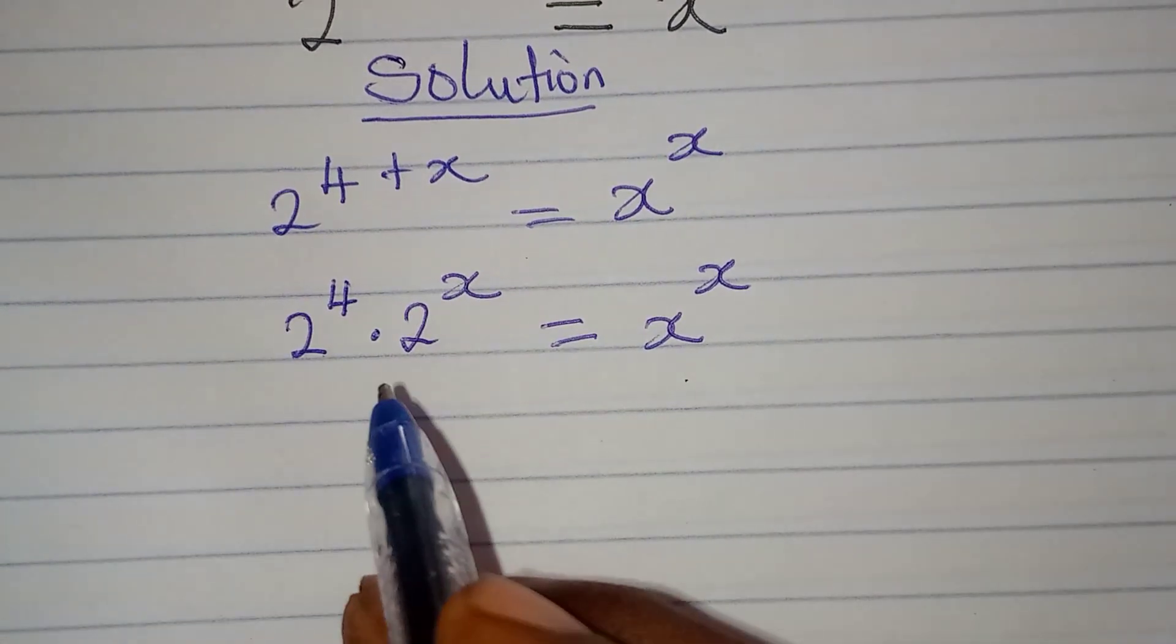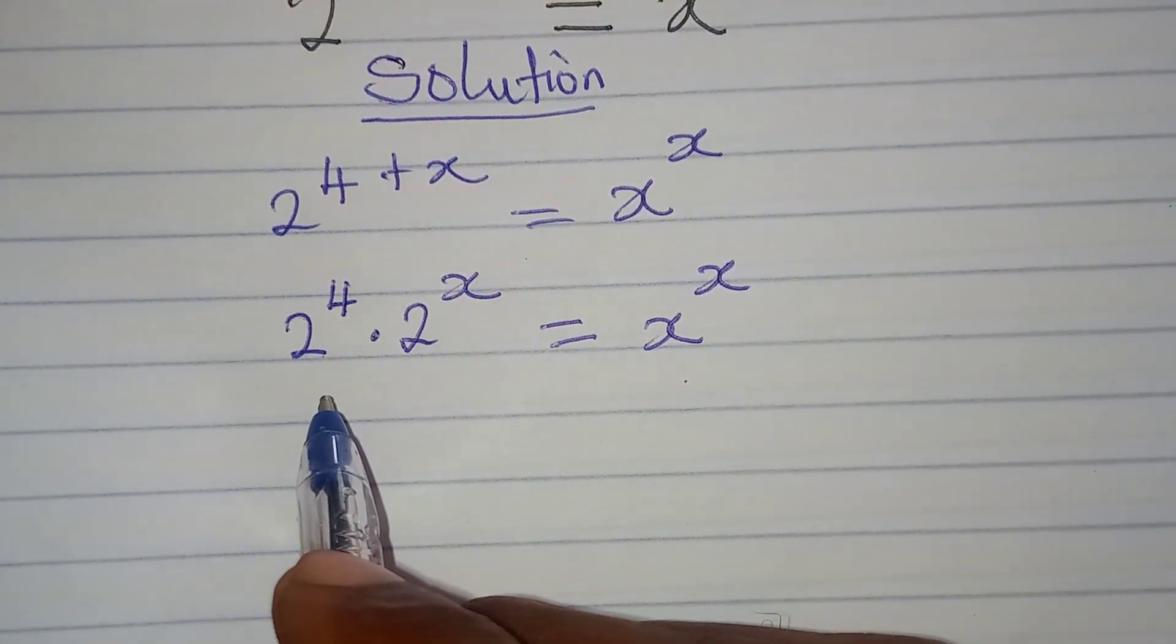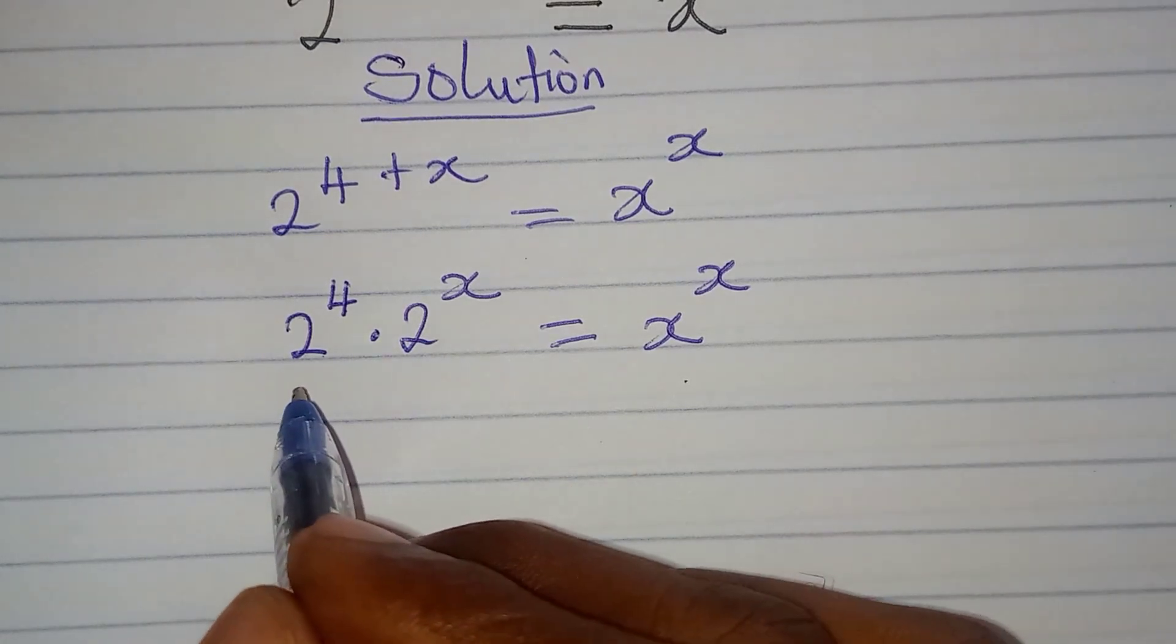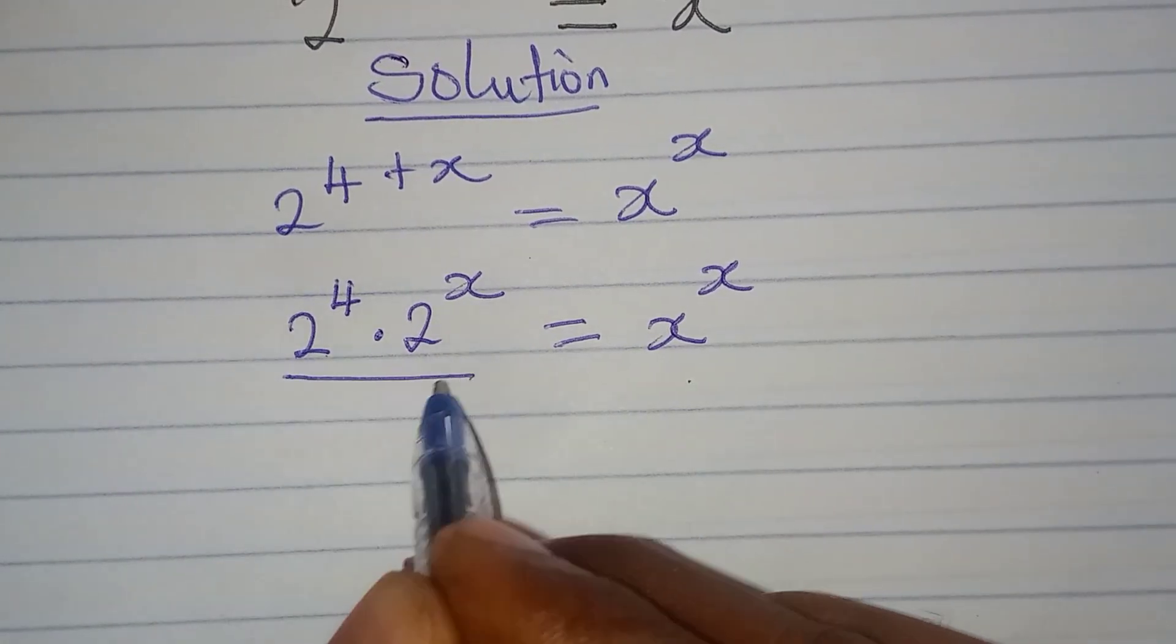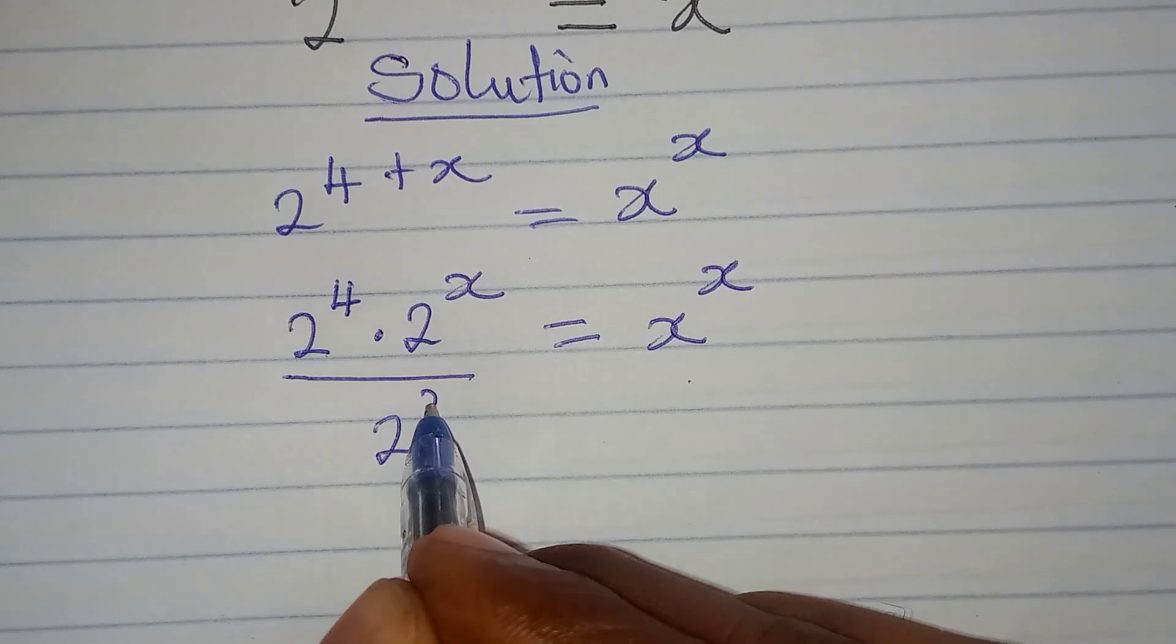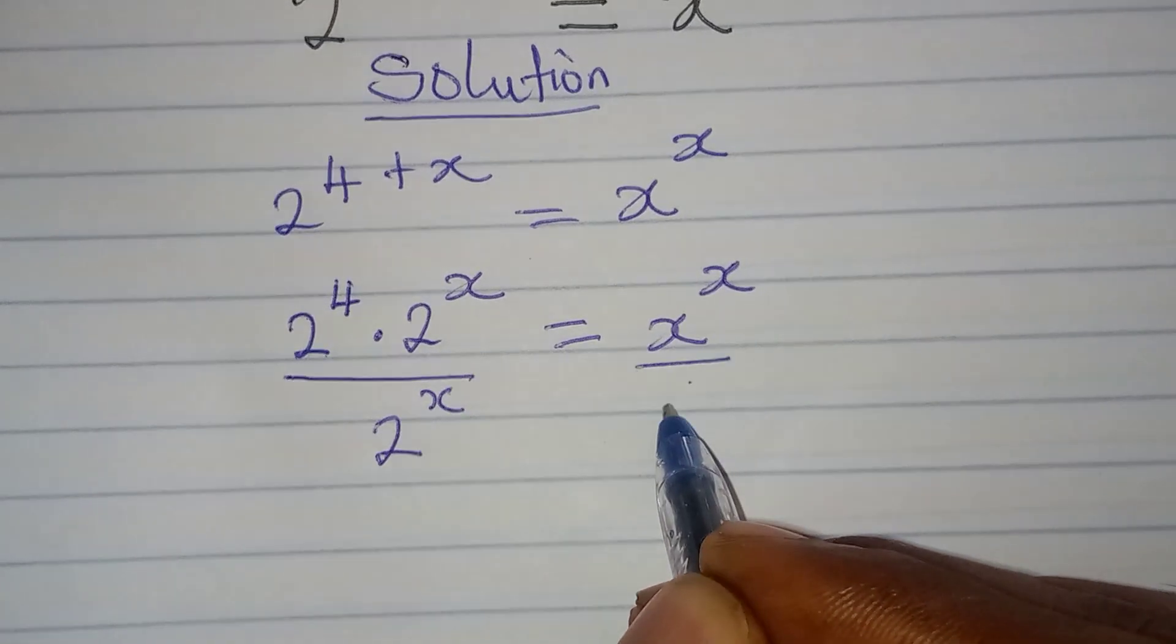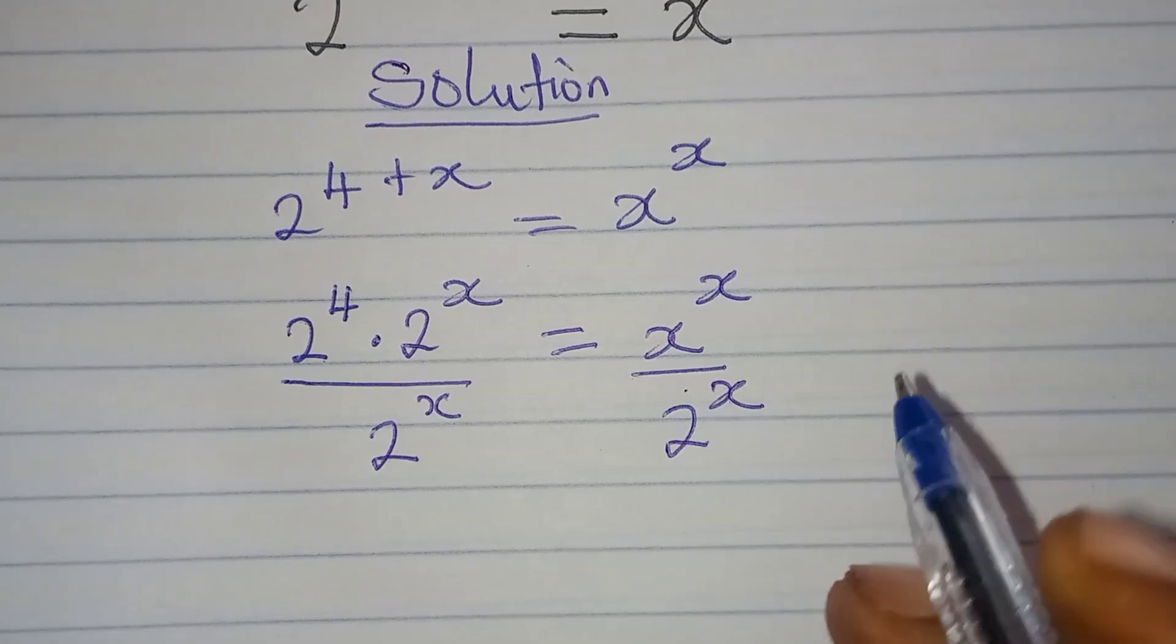Now, we take the next step. Remember, we can always divide this by 2 to the power of x. So if I do that, I'll have here over 2 to the power of x, and on the right hand side I have 2 to the power of x.